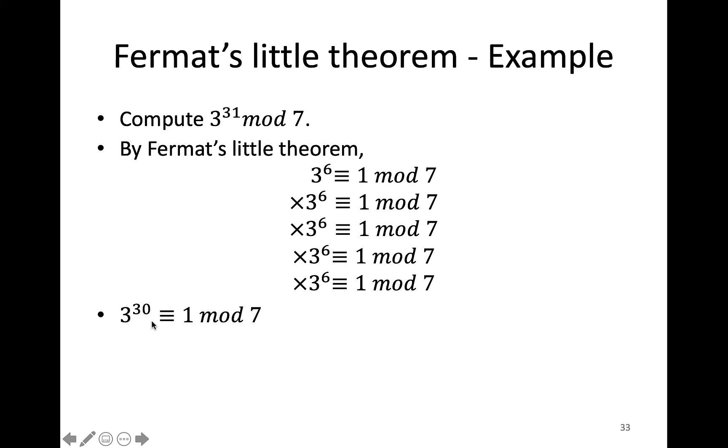So right now I have 3^30. Like 3^6 multiplied by 3^6 for 5 copies, then you end up having 3^30, which is congruent to 1 mod 7.